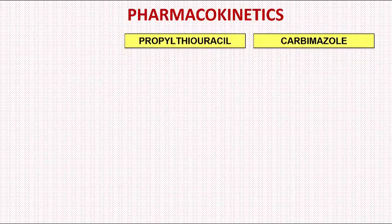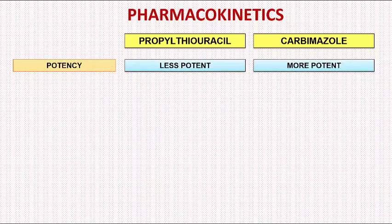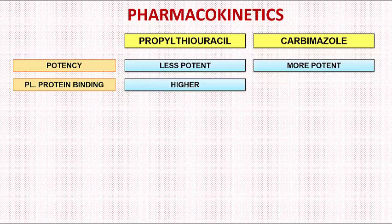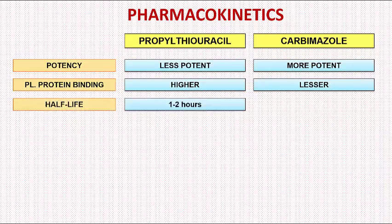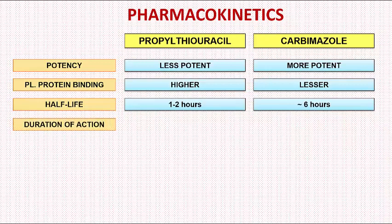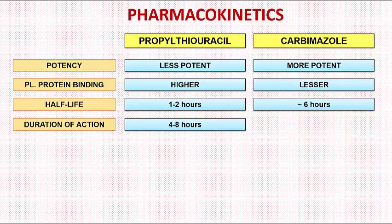Now we will look at the basic differences between propylthiouracil and carbamazole. The first is potency — propylthiouracil is less potent while carbamazole is more potent. Plasma protein binding is high with propylthiouracil and less with carbamazole. Half-life is 1 to 2 hours with propylthiouracil and around 6 hours with carbamazole. Duration of action is 4 to 8 hours with propylthiouracil and around 12 to 24 hours with carbamazole.